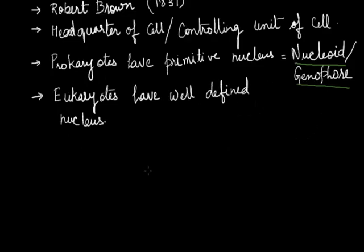But there are some exceptions in the case of eukaryotic cells as well. For example, the mature red blood cell of a mammal lacks the nucleus. Although there are certain cases where the RBC or erythrocyte contains a nucleus, generally we can say that in the case of mammals the mature red blood cells lack the nucleus.